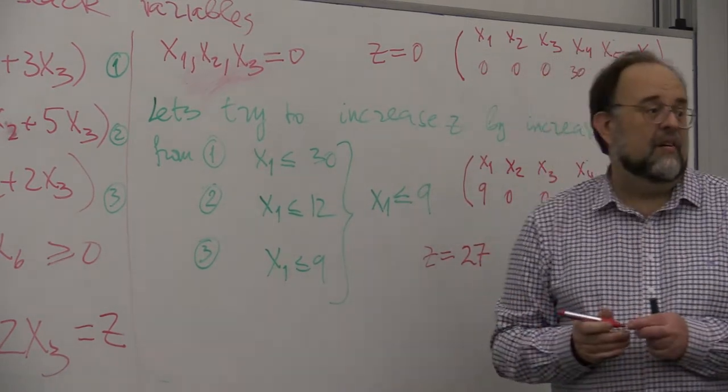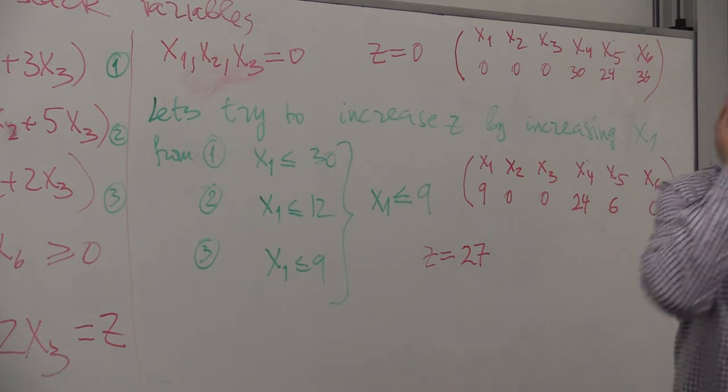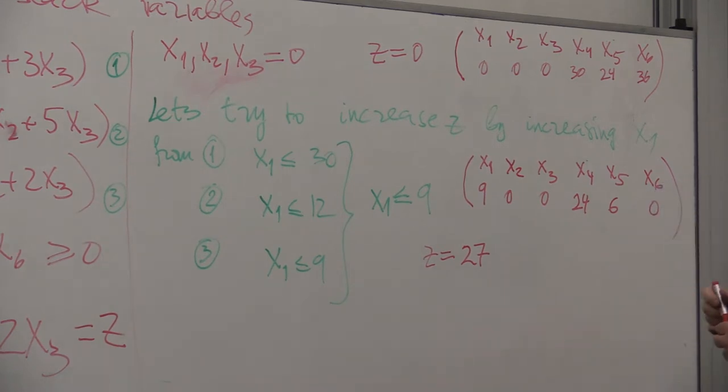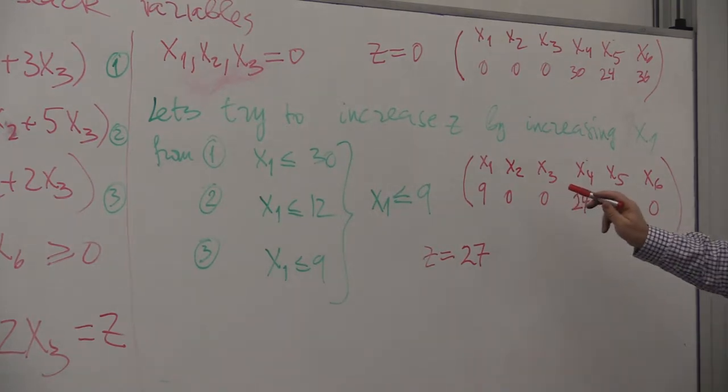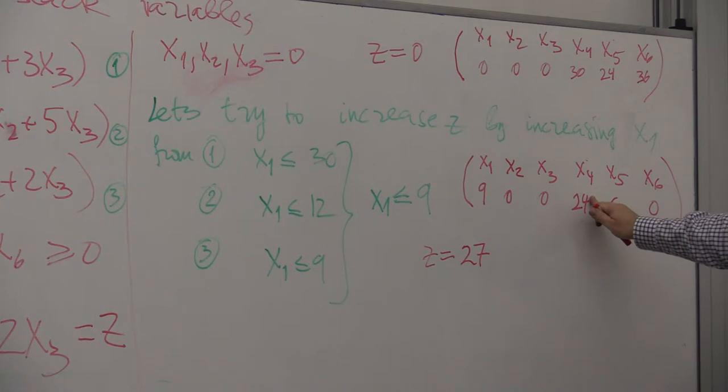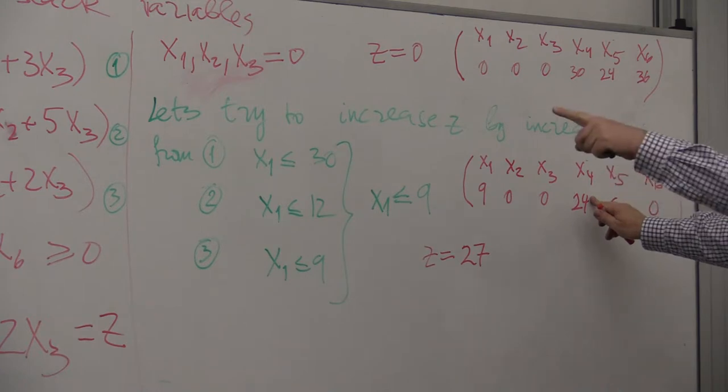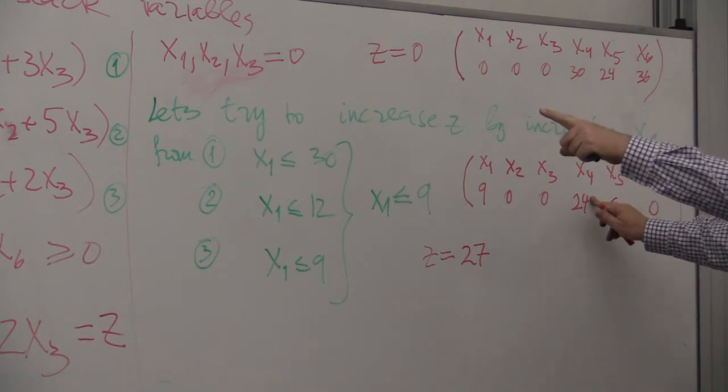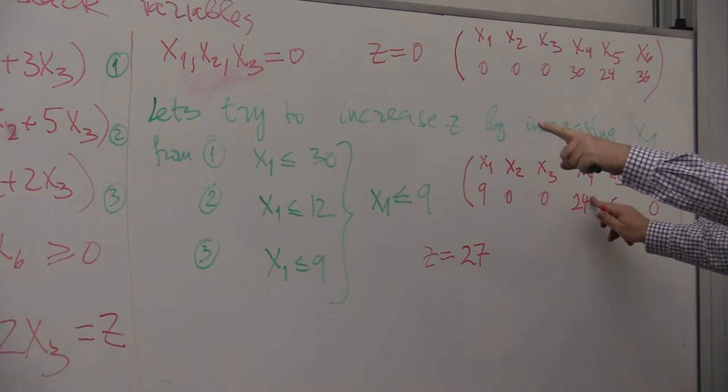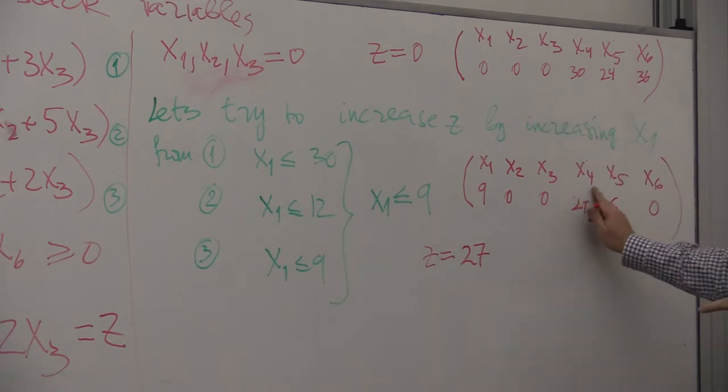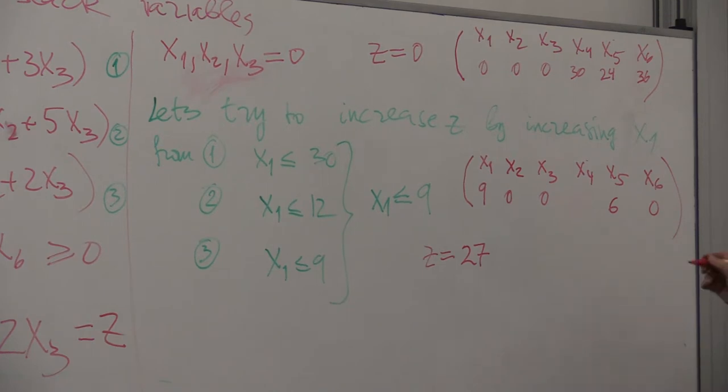Yes? Should x4 be 21? Sorry? Should x4 be 21? x1. x4. x... Sorry, which one? x4. x4 is... x4 is 2 times 9 is... x4, not x4. Oh, so this is 9, 30 minus 9 is... I don't know how I got this value, 30 minus 9 is 21. Thank you.